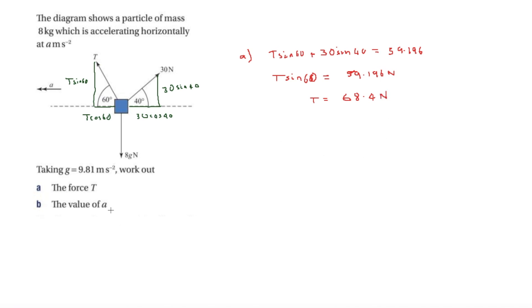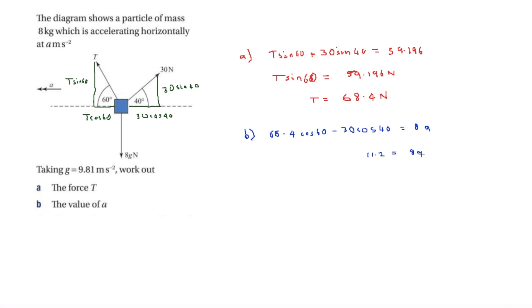Now we work out acceleration A using F equals MA, looking at horizontal forces. T cos 60, which is 68.4 cos 60, minus 30 cos 40 (acting in the opposite direction) equals 8A. The positive direction is to the right. This gives 11.2 equals 8A, so A equals 1.4 metres per second squared.